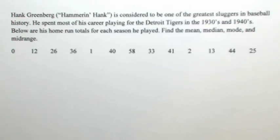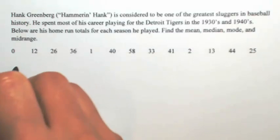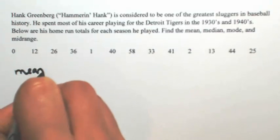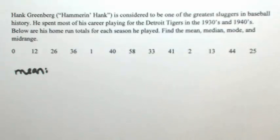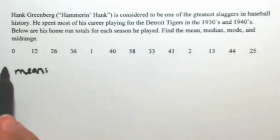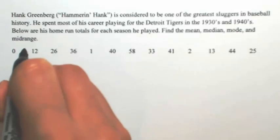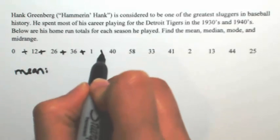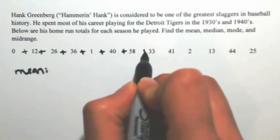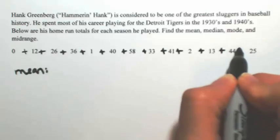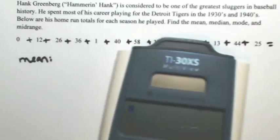Find the mean, median, mode, and mid-range. So let's find each one, starting with the mean. The mean is also known as the arithmetic average, which means that we're going to add all of these numbers up and then divide by the total number that we have. So I'm going to add each of these numbers.